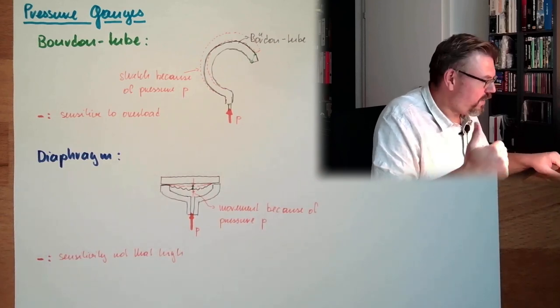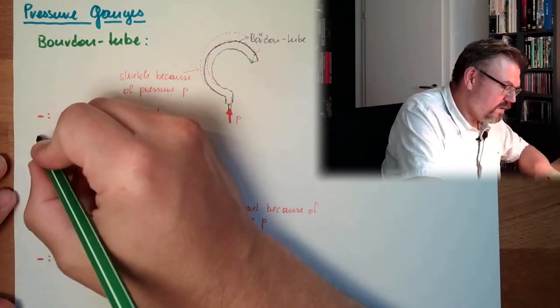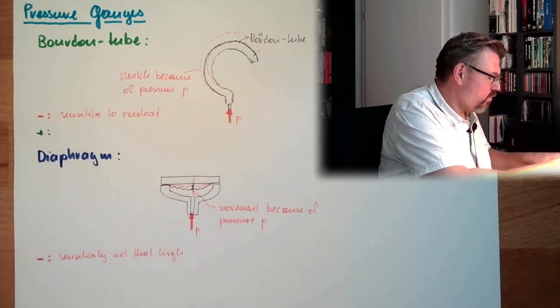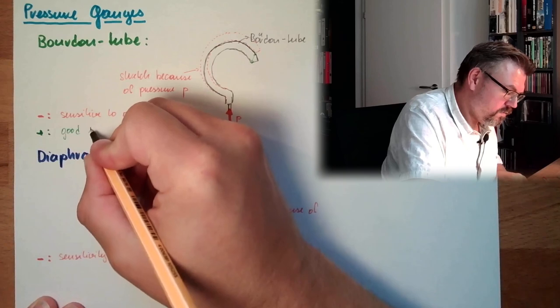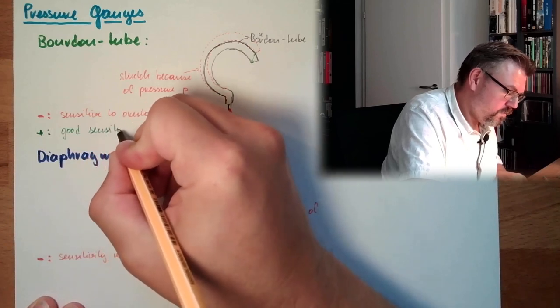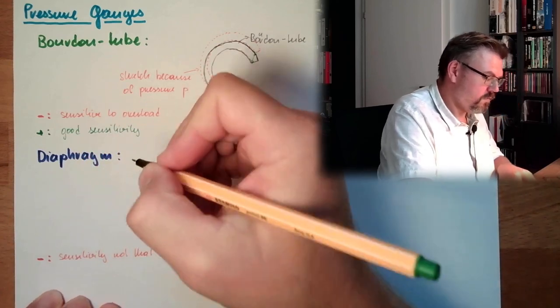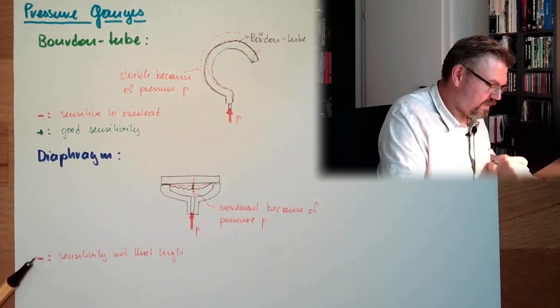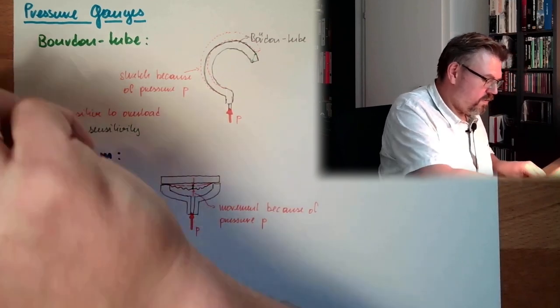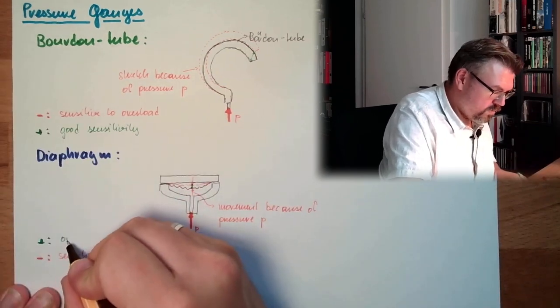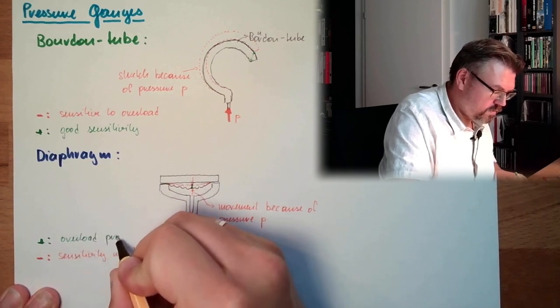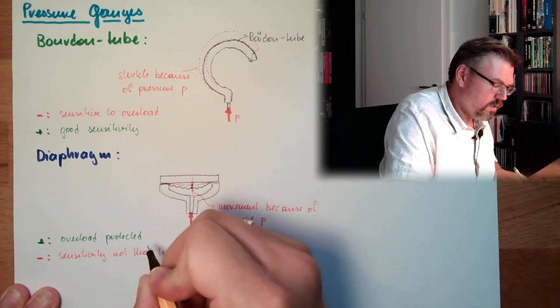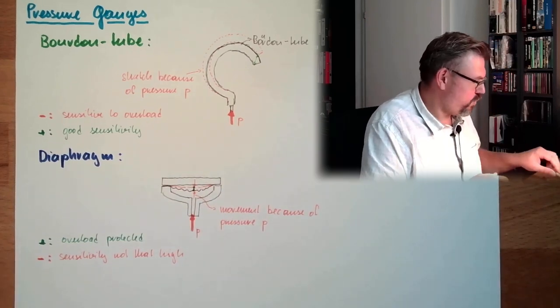And the benefits are, of course, vice versa. So here, on the plus side, we have good sensitivity. And here, on the plus side, we have overload protected. Not all, but usually, it's the way. Pressure gauges.